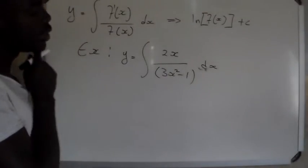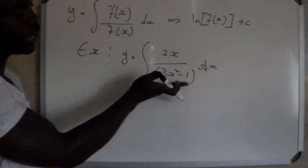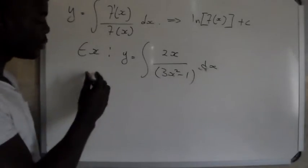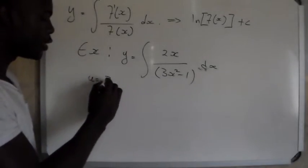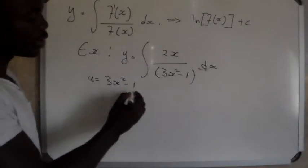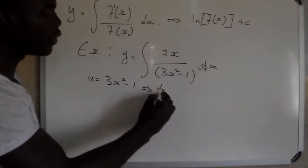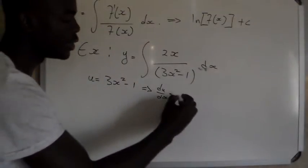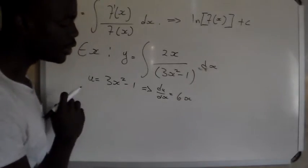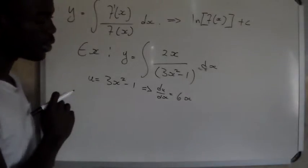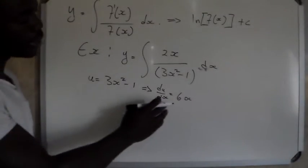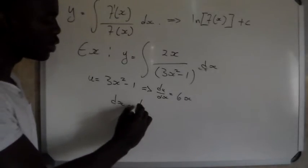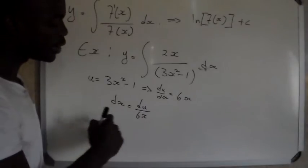If you look at the original formula, this is f(x) and here is the derivative of f(x). So we're going to let u equal 3x² - 1. The derivative of this means du/dx will be equal to 6x, since the derivative of a constant is 0. Then we're going to make dx the subject of the formula, so dx equals du over 6x.